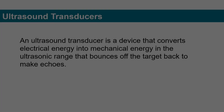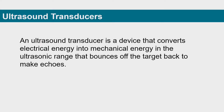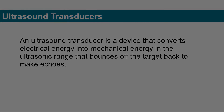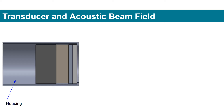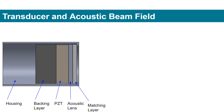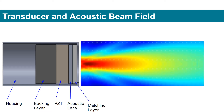An ultrasound transducer is a device that converts electrical energy into mechanical energy in the ultrasonic range, that bounces off the target back to make echoes. A transducer is composed of a case or housing, backing layer, piezoelectric crystal or PZT, acoustic lens, and matching layer. Its acoustic beam field looks like this.